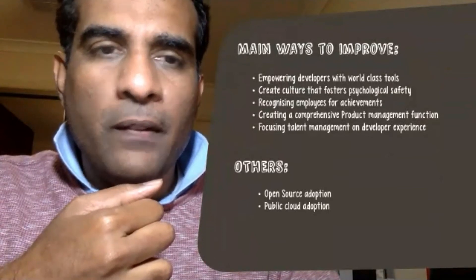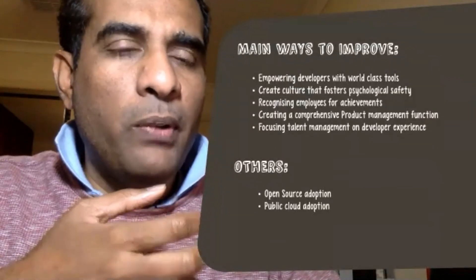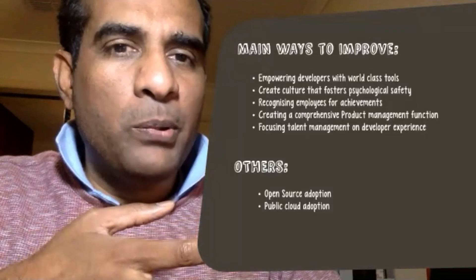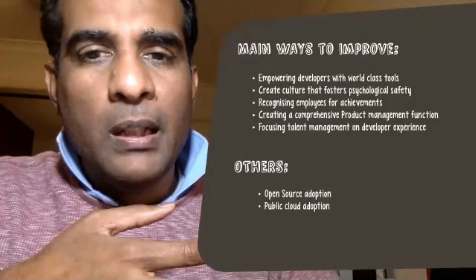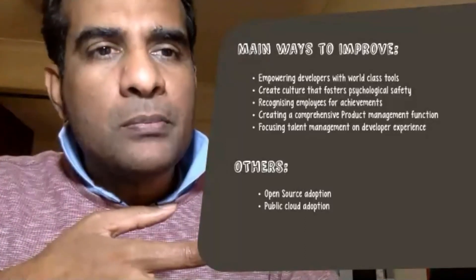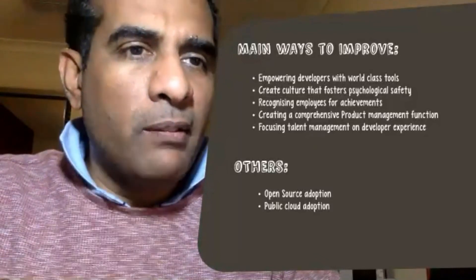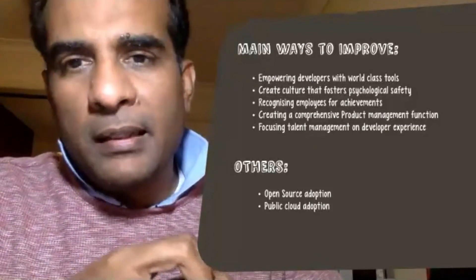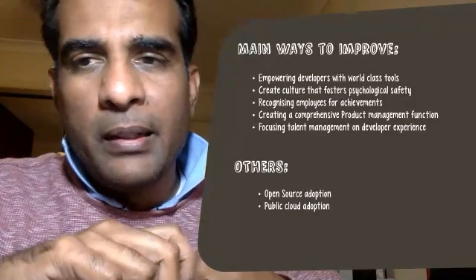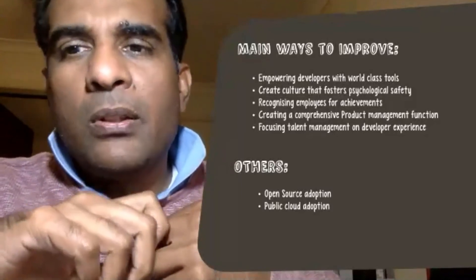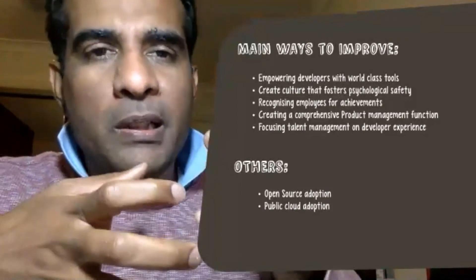There are five things they specifically called out as main ways to improve. The number one thing was empowering developers with world-class tools. Top companies give developers a degree of choice — they give them about two to five options.